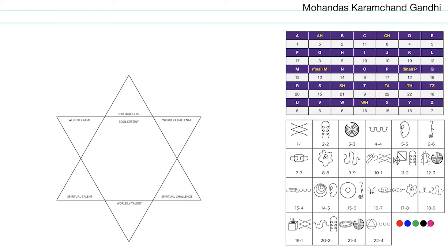We're going to chart the map for Mahatma Gandhi. I have a workspace prepared — I've got the star of creation, the blank one, and the conversion table for the alphabet to numbers. Very important to pay attention: within that, we have some letters highlighted in yellow, and these are letter combinations like CH, AH, and there's also a final M and a final P.